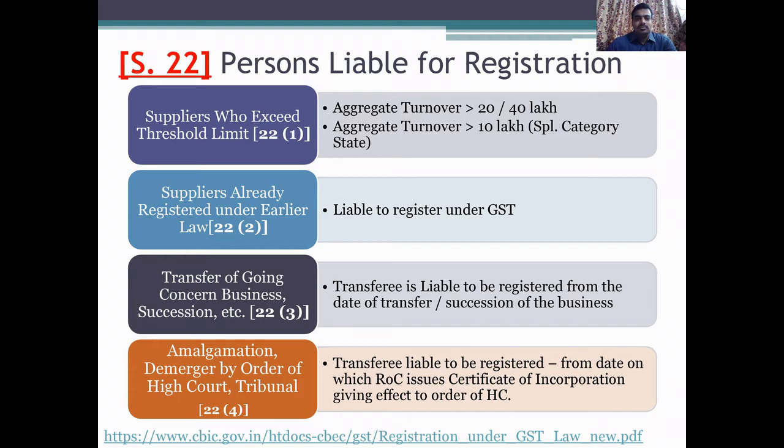Section 22 deals with Persons Liable for Registration. There are four different categories under this head. Section 22, subsection 1 deals with suppliers who exceed the threshold limit. The aggregate turnover exceeds more than Rs. 20 lakhs or Rs. 40 lakhs. The second point is that the aggregate turnover exceeds Rs. 10 lakhs in the case of a special category state. These two points will be dealt with in depth in the coming slides.